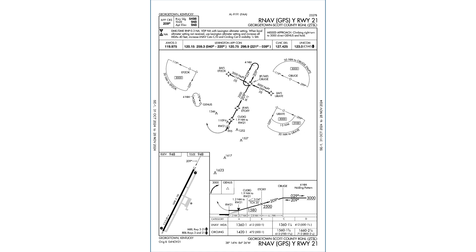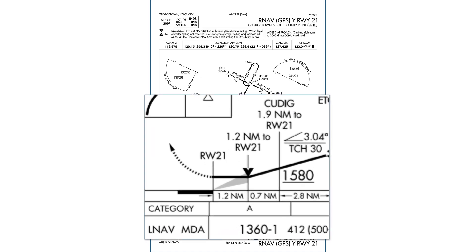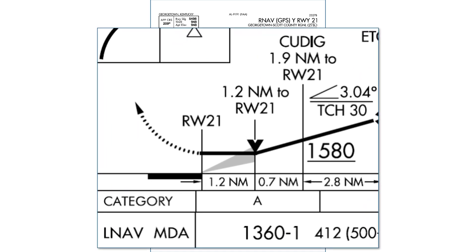If we start our descent too early, we could impact terrain or obstacles. Too late, we might overrun the runway. The procedure designers often include this black V symbol, a visual descent point or VDP, to help us figure out when to begin a descent from the MDA on a non-precision approach.